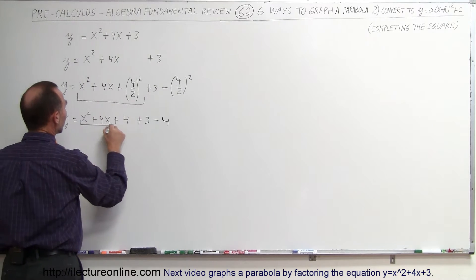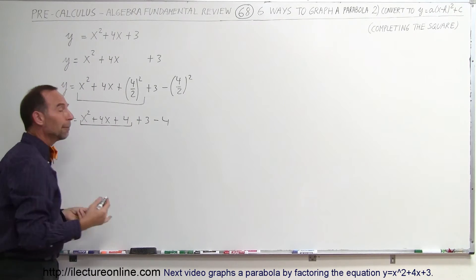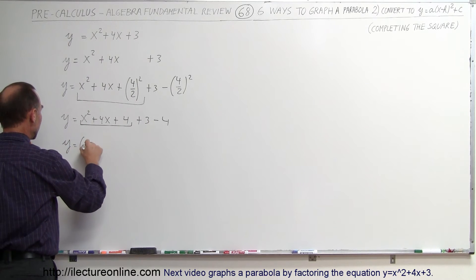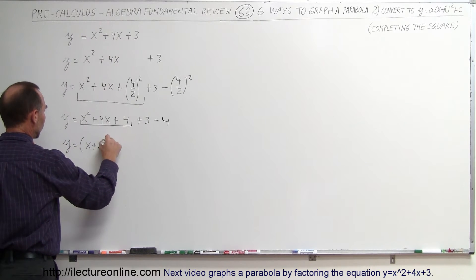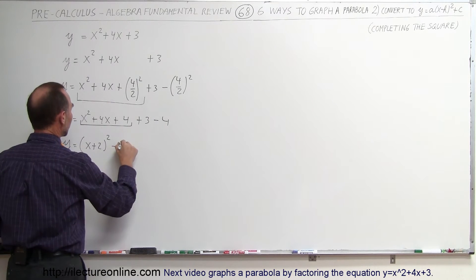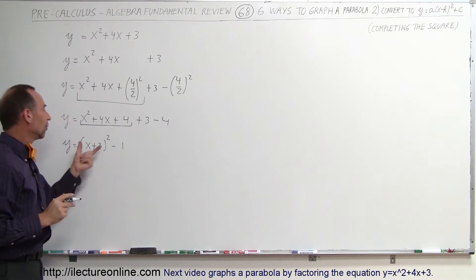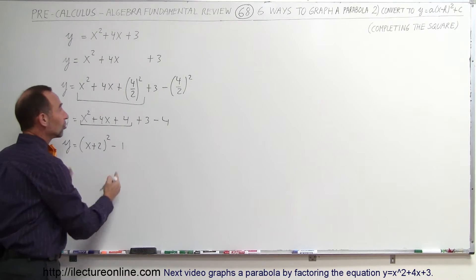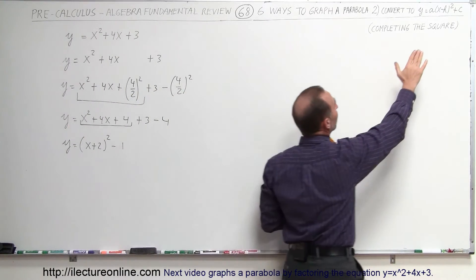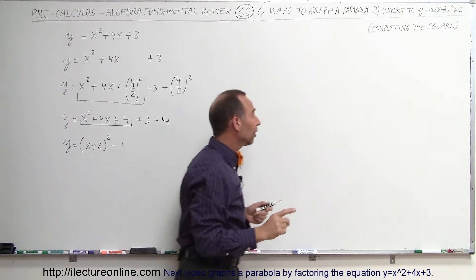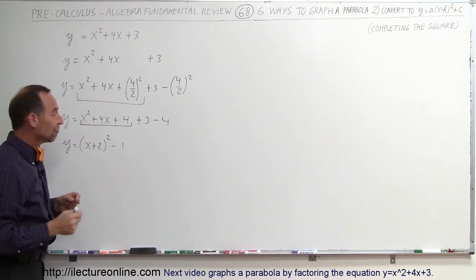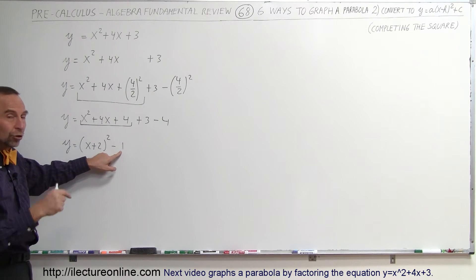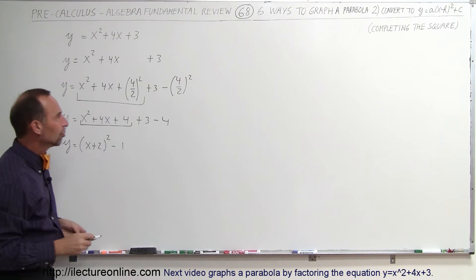Now when you look at this part of the equation, you can write it as a binomial squared. You can write this as y equals the quantity x plus 2, squared, and then we have plus 3 minus 4, which becomes minus 1. Notice we've now written this in that general form: y equals (x + 2)² − 1.